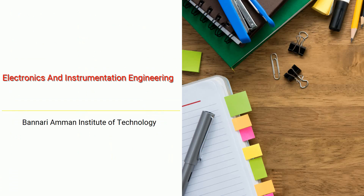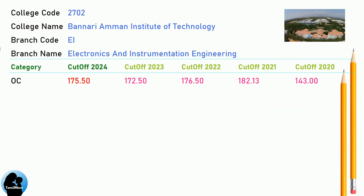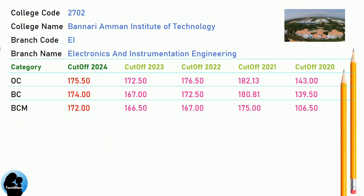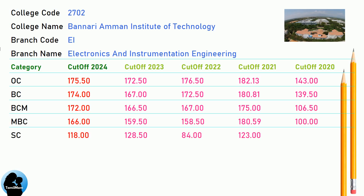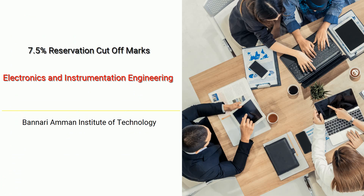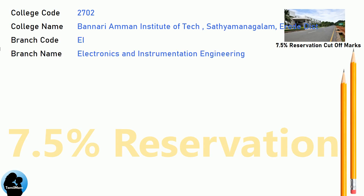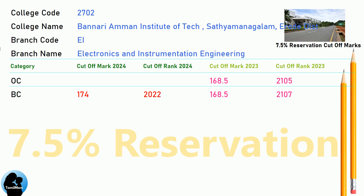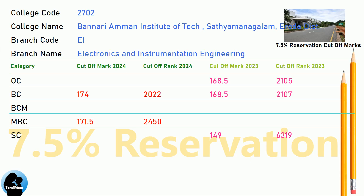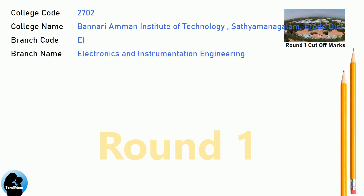DNA Cut-Off for Banari Amman Institute of Technology in Electrical and Instrumentation Engineering. DNA 7.5 Reservation Cut-Off and Round 1 Cut-Off for Banari Amman Institute of Technology in Electrical and Instrumentation Engineering.